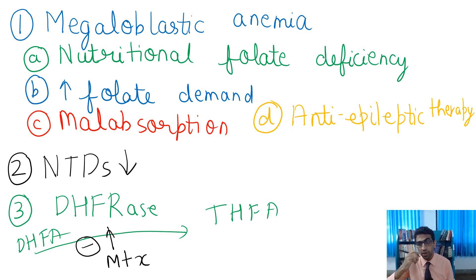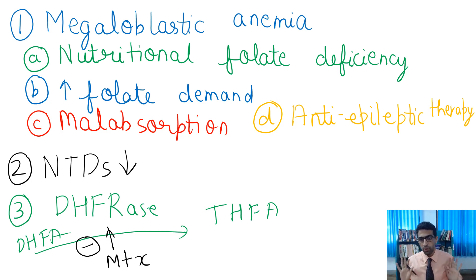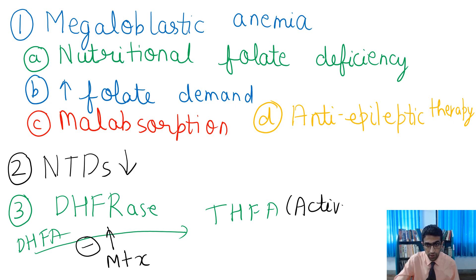What we eat in our diet is dihydrofolic acid. Normally there's no problem because our body has dihydrofolate reductase enzyme in sufficient quantity, converting dihydrofolic acid into tetrahydrofolic acid — its active form. But when methotrexate is given, as an anti-cancer drug or immunosuppressant, this conversion doesn't happen, so deficiency of folic acid occurs.